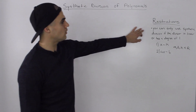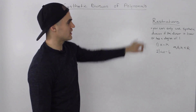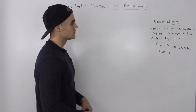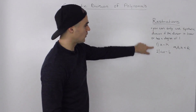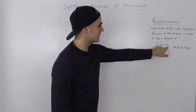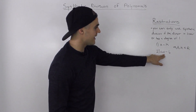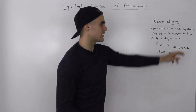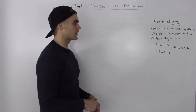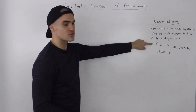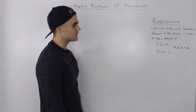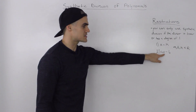You can only use synthetic division if the divisor is linear, or has a degree of one. The divisor has to be in one of two forms: either the X minus K form, or the AX minus B form, where A, B, and K are just any real number. In this particular video, we're just going to go through the first case — the X minus K form.